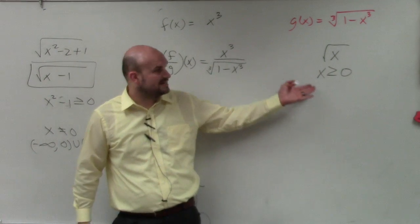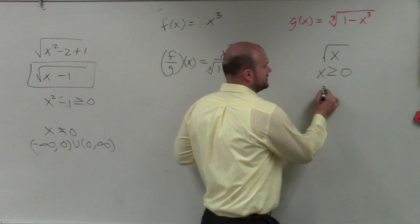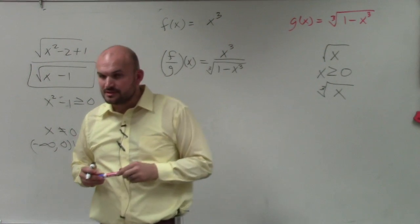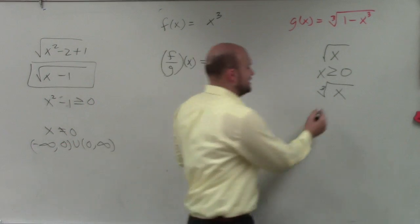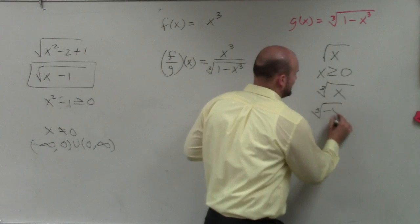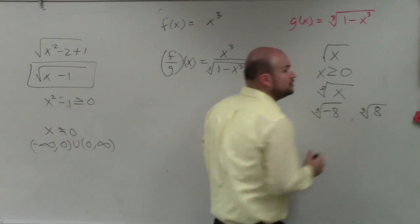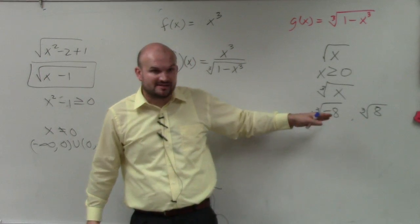Now, in the exact same example, this is not... Let's look at the cube root. Well, the cube root, we can take the cube root of a positive and a negative number, right? Think about it. The cube root of negative 8 and the cube root of positive 8. The cube root is saying, what number multiplied by itself three times can you get to give a negative 8?